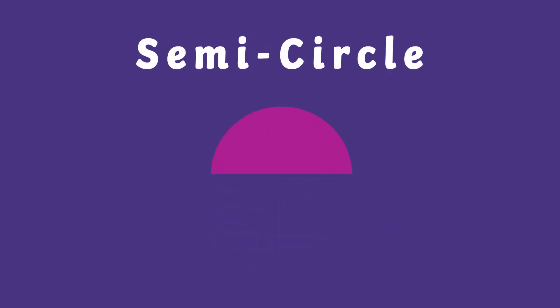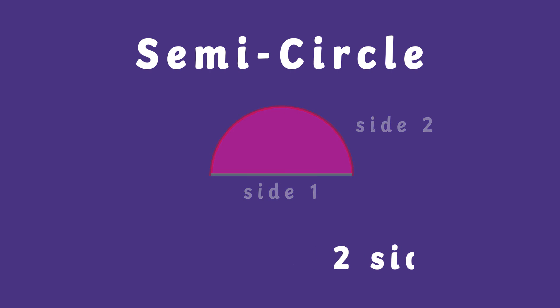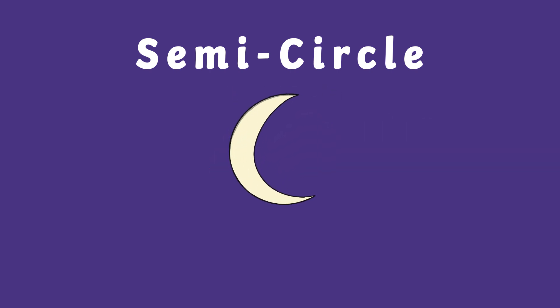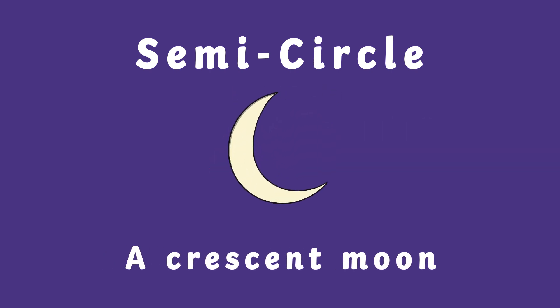The next shape is a semi-circle. This is a circle that has been cut in half so that it has two sides. A crescent moon is an example of a semi-circle.